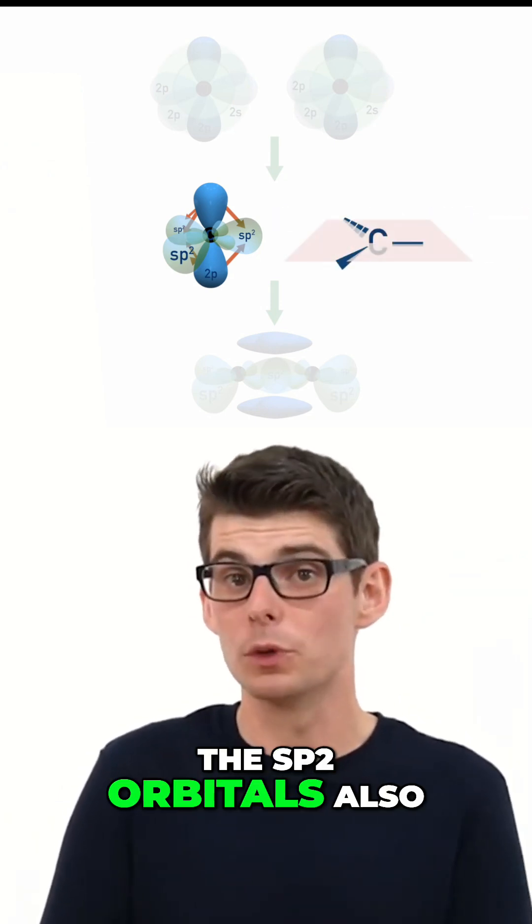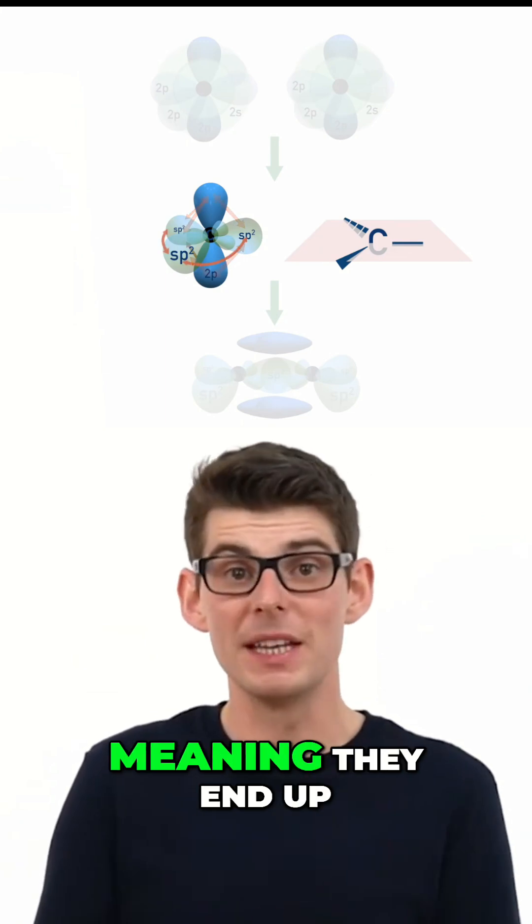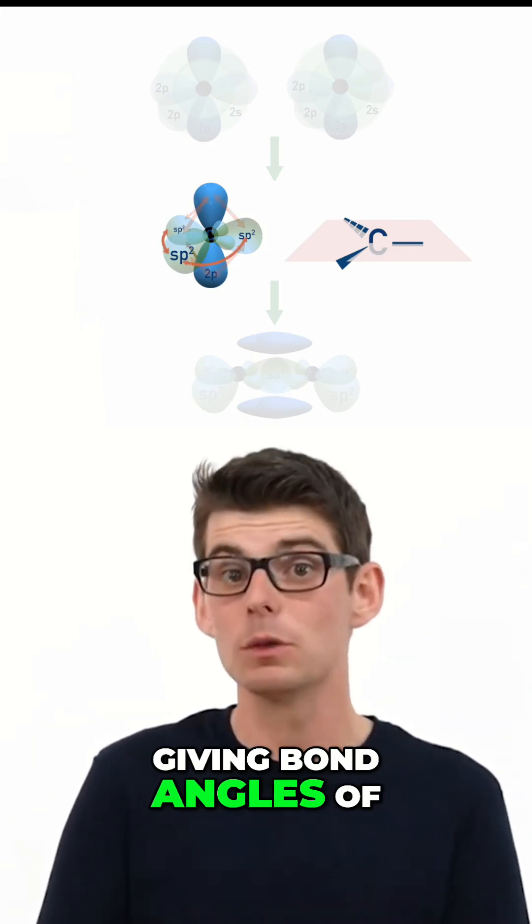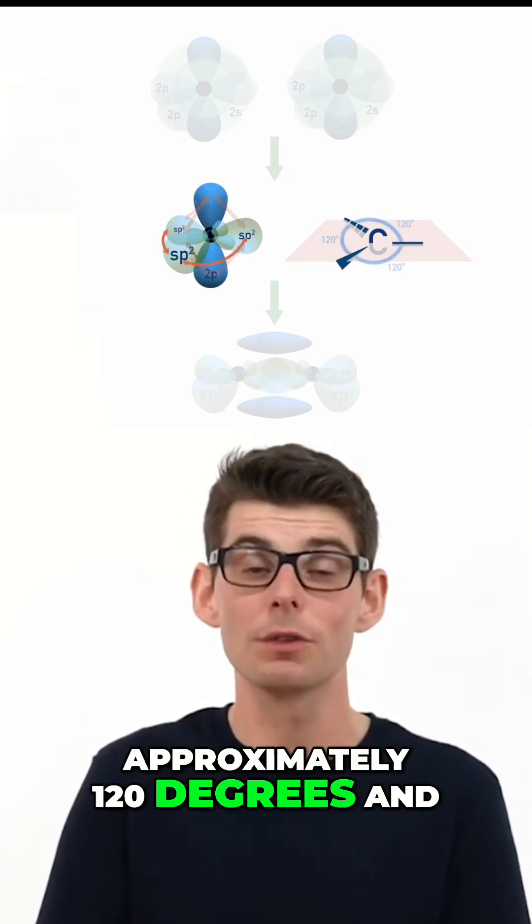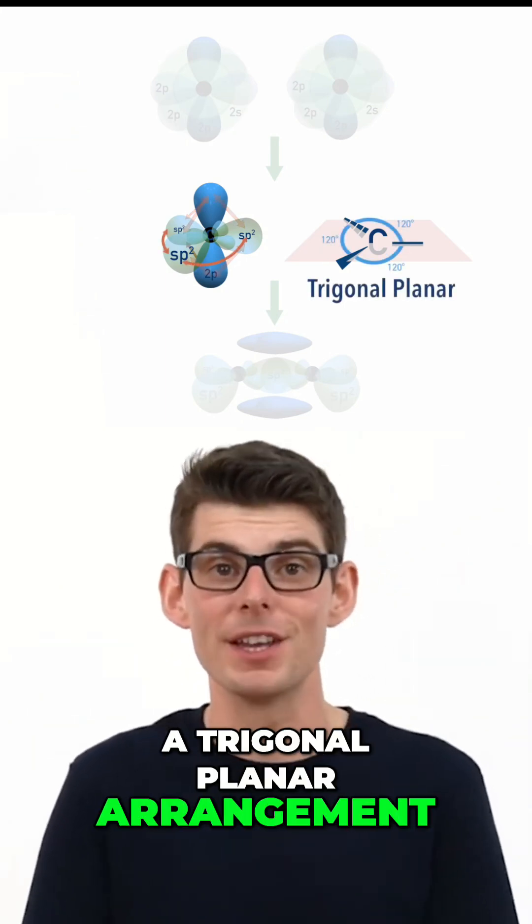The sp2 orbitals also repel each other, meaning they end up equally far apart, giving bond angles of approximately 120 degrees and a trigonal planar arrangement.